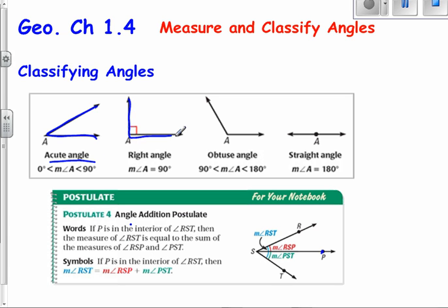Angles that are exactly 90 degrees, we call it right, and you always know that by that little square symbol. Obtuse angles are angles that are greater than 90 but less than 180. And then you have what's called a straight angle, which is exactly 180 degrees.